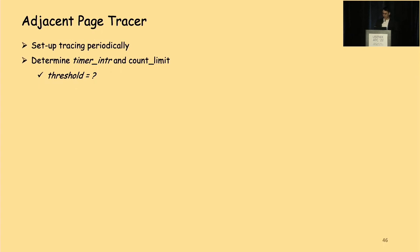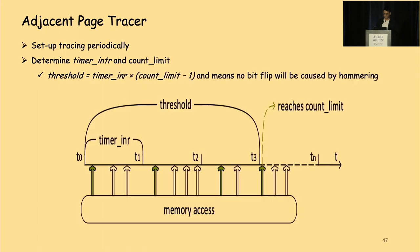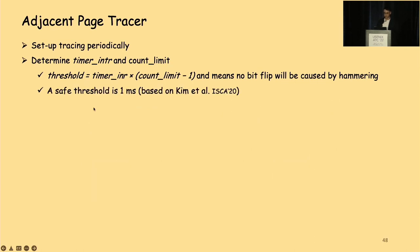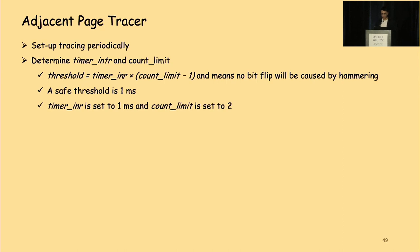In our implementation we choose the reserved bit. We observe that the kernel performs active checks of the present bit, and we cannot avoid such checks without modifying the kernel code. For the reserved bit, it is unused even in recent Linux kernels, so there is no check against the reserved bit. To determine timer interval and count limit, we need to know the value of the threshold. The threshold must satisfy: timer interval × (count limit − 1), representing the attacker's hammering time before our refresh. Based on the ISCA 2020 paper, a safe threshold is one millisecond — no bit flip can occur within one millisecond when a DRAM chip is being frequently hammered. Given that both are unsigned integers, we set timer interval to one millisecond and count limit to two to keep the security guarantee.